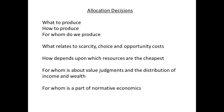Let us return to the three basic questions for economics: What do we produce? How do we produce? And for whom do we produce? Deciding what we should produce will depend on the scarcity of resources, the choices of the community, and opportunity costs. In the example we chose, it was a choice between food production and cloth production.